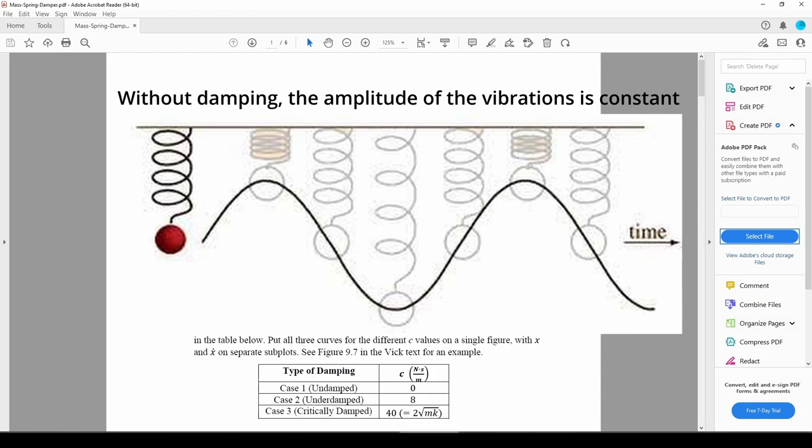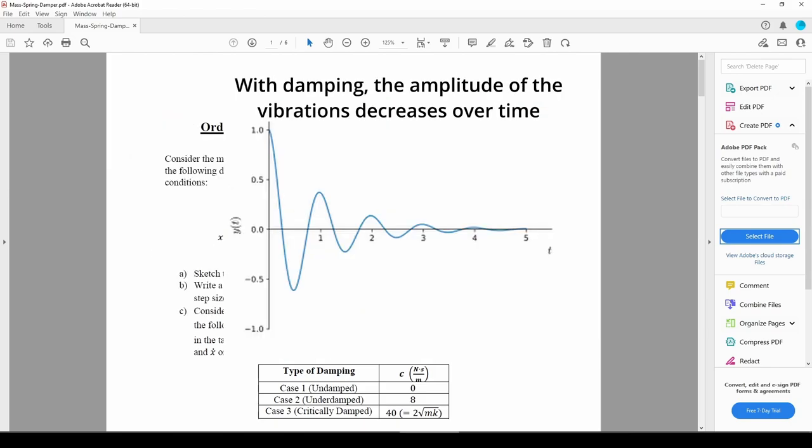You might remember from your Physics 1 class that setting a mass spring system in motion results in simple harmonic oscillations. The oscillations would continue indefinitely, but obviously this doesn't happen in real life. In reality, a vibrating object will vibrate with a progressively decreasing amplitude until it eventually stops moving.